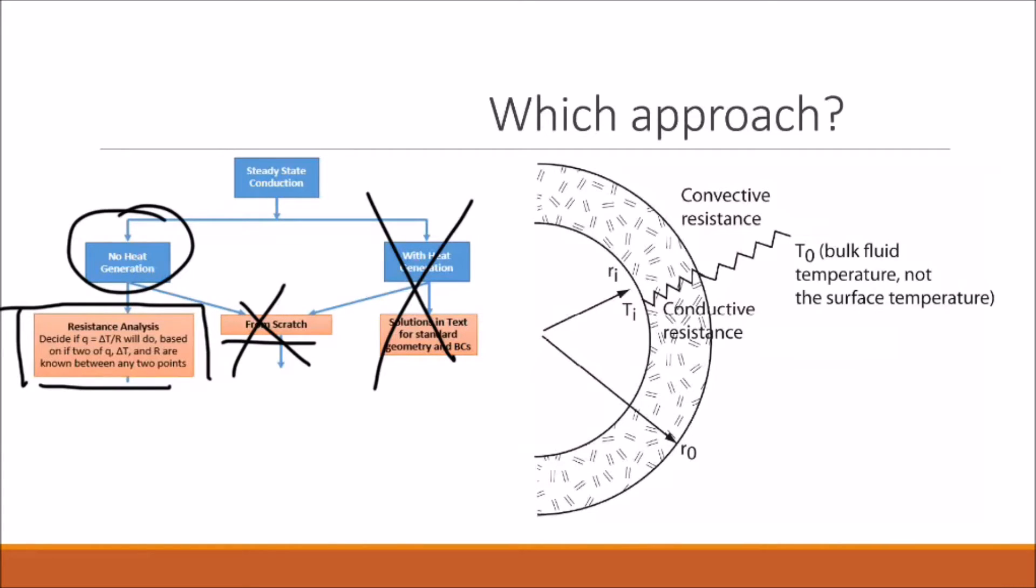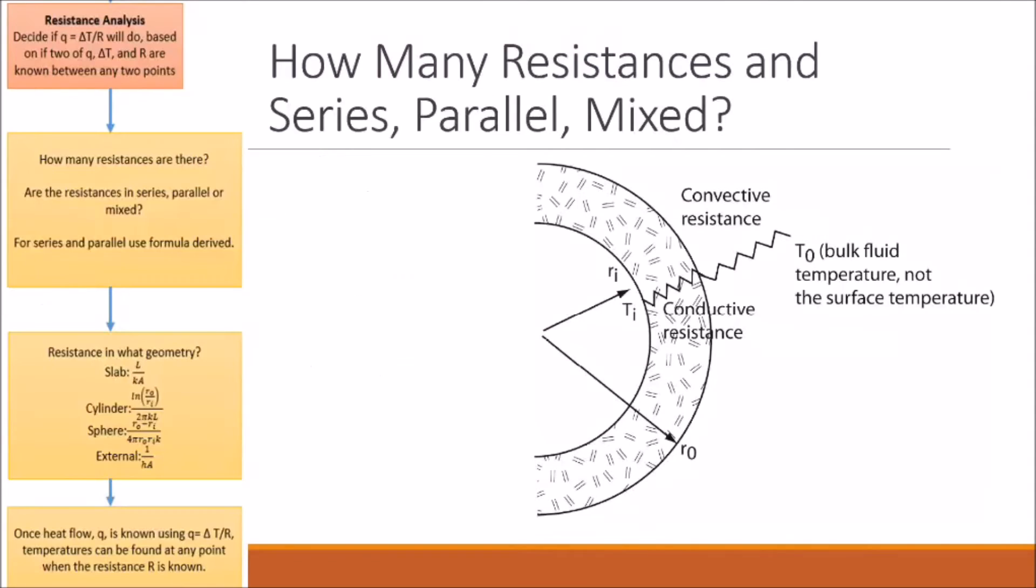We're also given two temperatures and a thickness from which we can determine the resistance to find the heat flow. So again, the resistance analysis is the best approach for this problem. In this problem, we're told to consider the convective resistance as well as the conductive resistance. Now we need to determine if these resistances are in series, parallel, or some mixed configuration.